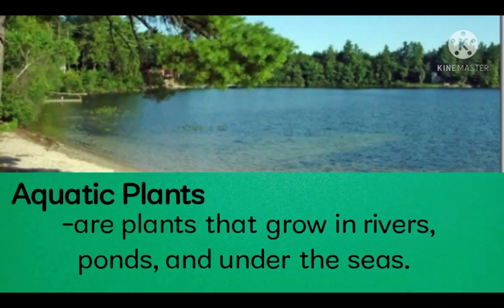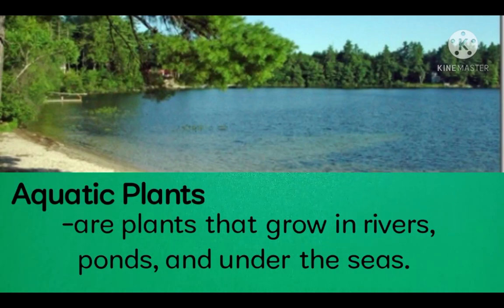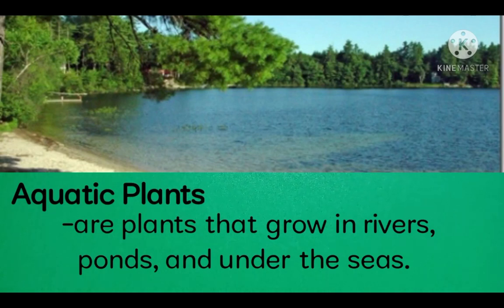Aquatic plants are plants that grow in rivers, ponds, and under the seas. These plants are sources of food and oxygen for animals living in the water. Most plants that live in water have soft, hollow stems and light roots. Some have wide, smooth, and shiny leaves that let them float in water.